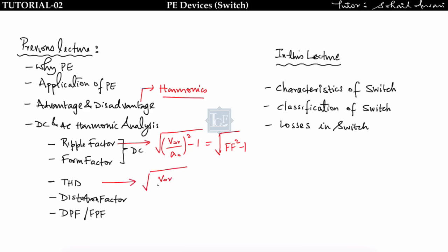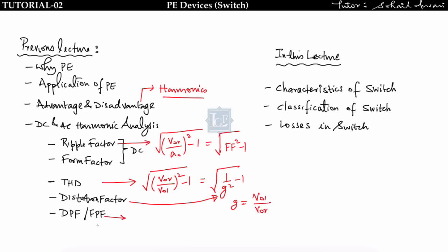We also derived AC harmonic parameters like THD, given by the square root of (V_rms / V_fundamental)² minus one, which equals the square root of (1/G²) where G is the distortion factor equal to fundamental RMS voltage divided by total RMS voltage. We also derived displacement power factor equal to cos(θ), where θ is the angle between fundamental RMS output voltage and fundamental RMS output current.